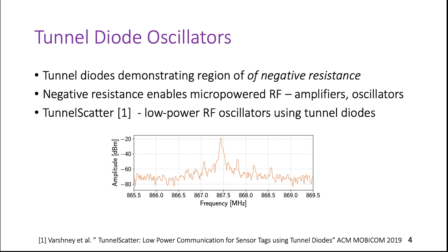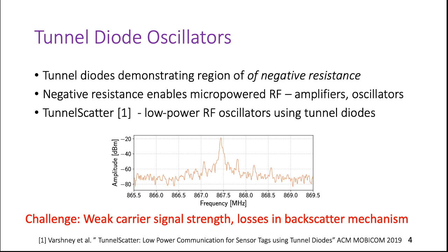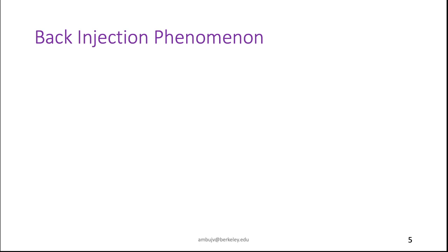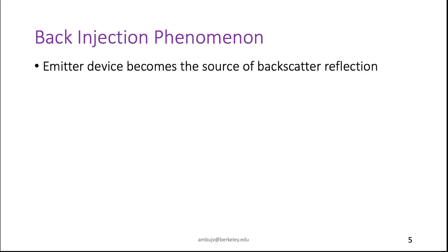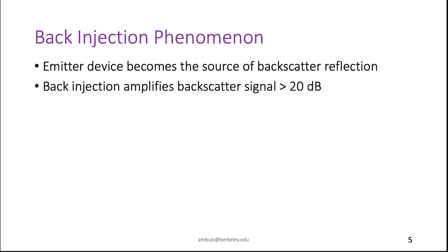In Tunnel Emitter, we build on Tunnel Scatter and enhance this design. However, we face a key challenge: the carrier signal generated is weak, and the range of a backscatter system scales with the strength of the carrier signal. Hence, our Tunnel Emitter would achieve very short communication range, limiting application scenarios. However, this is not the case for our system, because of a phenomenon we demonstrate for the first time, which we call back injection. Back injection allows emitter devices to become the source of the backscatter reflection, meaning the emitter device can amplify the weak backscatter signal by a gain as high as 20 dB, thus overcoming the limitation of a weak emitter.